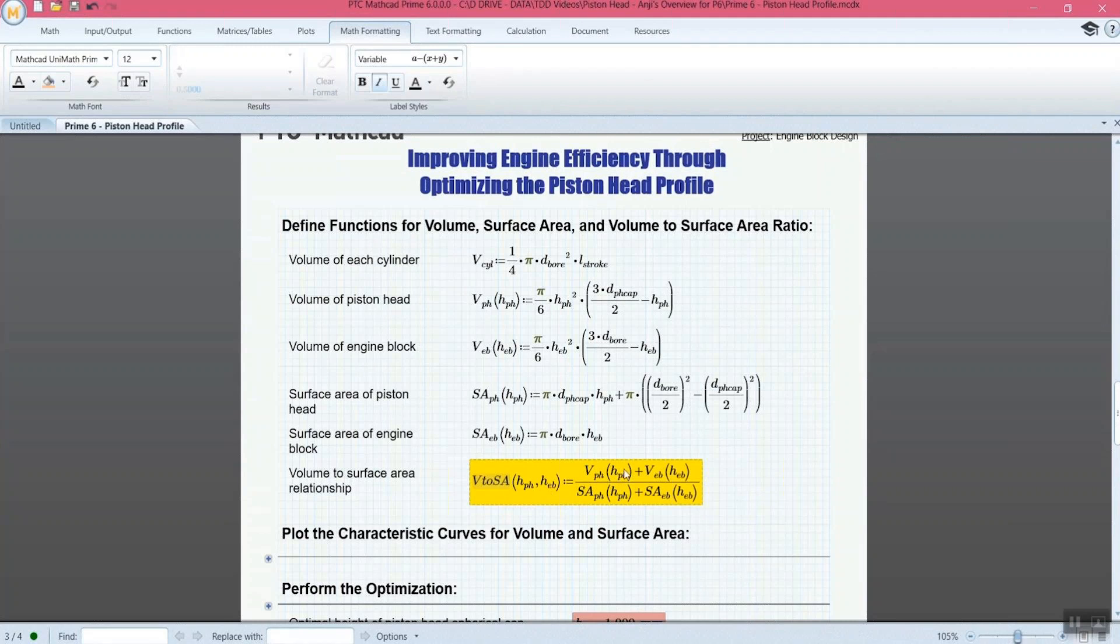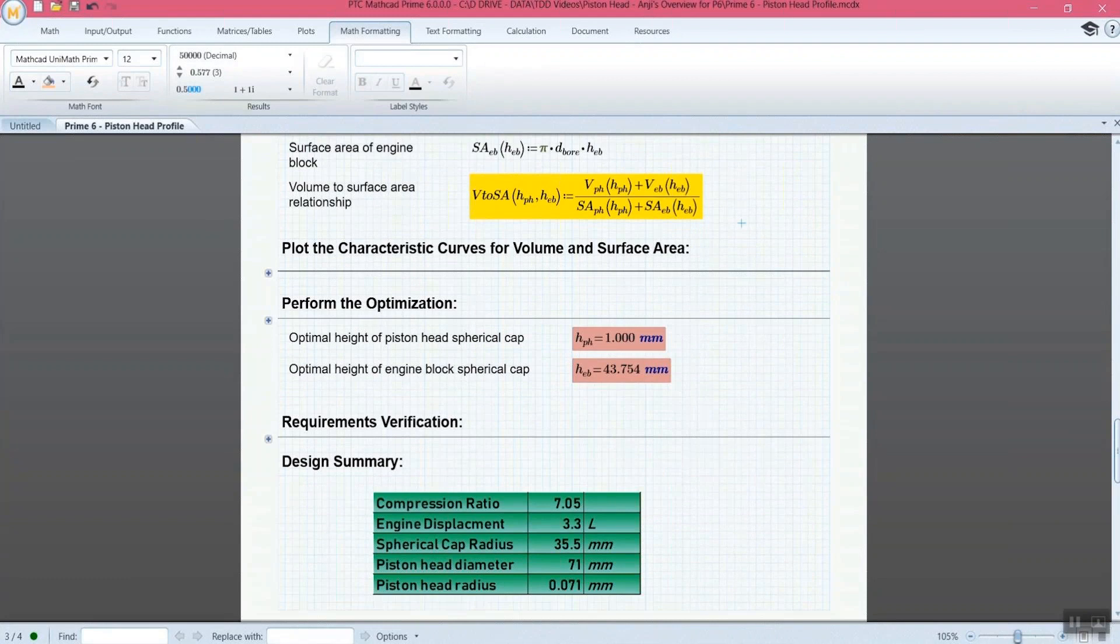We have our volume of our surface area. We have this relationship highlighted because this is an important relationship for the calculations that we're doing. So we're able to come back to that whenever we need to, to say, what are my important equations? What am I trying to solve here in the end?